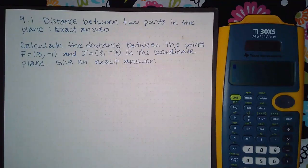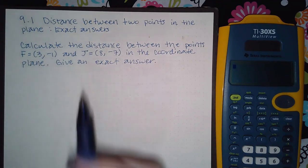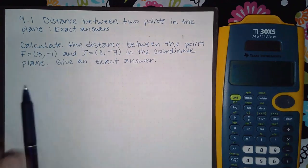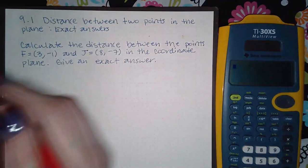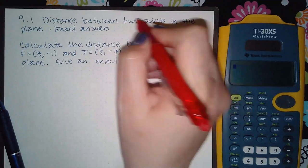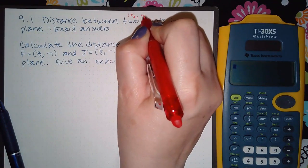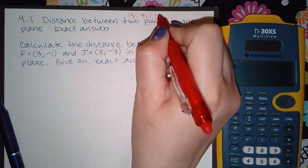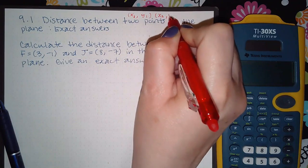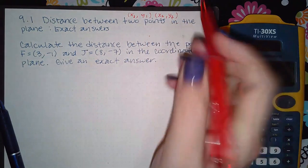Here we have 9.1 distance between two points in the plane with exact answers. We need to know what the distance formula is before we can begin. Normally when we give you two points, they write the points in this form: the first x-coordinate, the first y-coordinate, the second x-coordinate, and then the second y-coordinate.